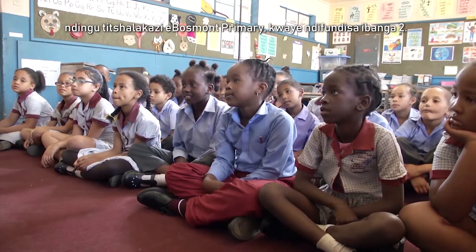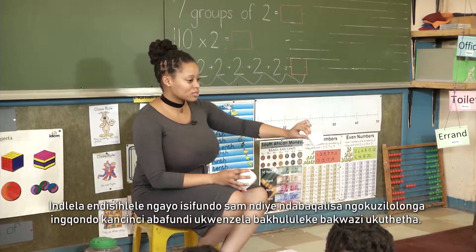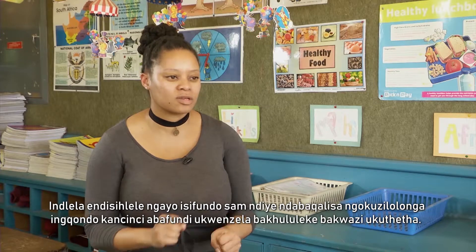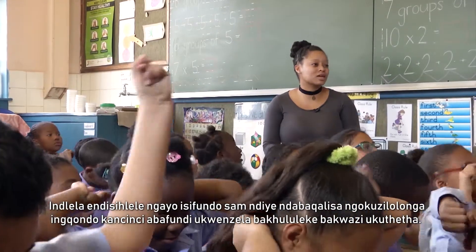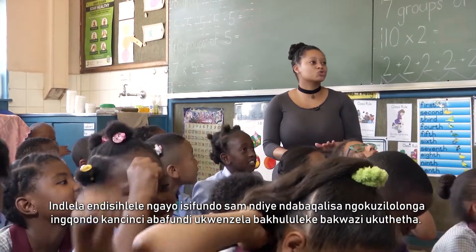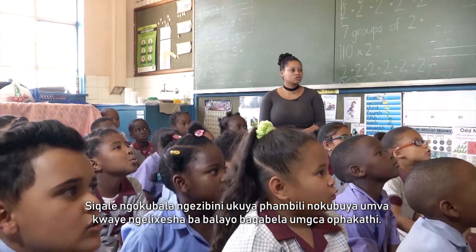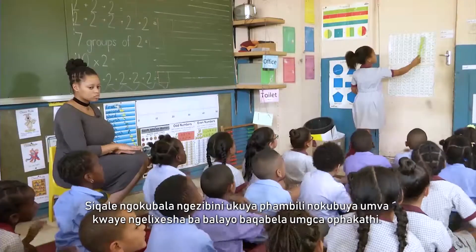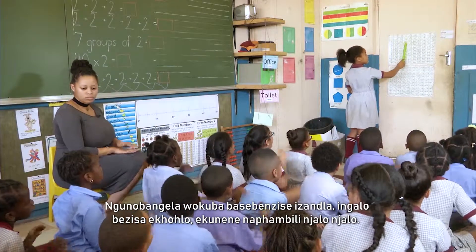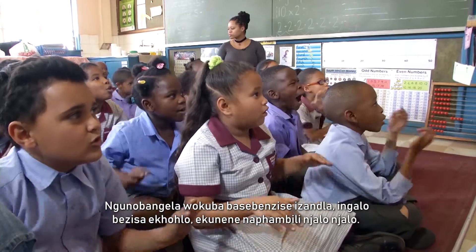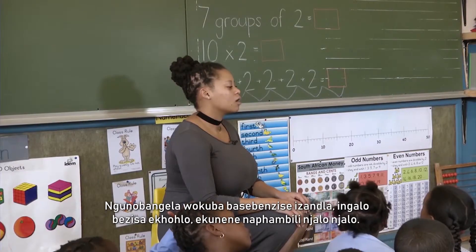Hi, my name is Sendegashlem Bogazi. I've been teaching at Bosman Primary for the past three years and I teach grade twos. The sequence of my lesson was that we first started off just for the aim of warming up their brains a bit and to also get them speaking and into the lesson. We started counting in twos, forwards and backwards, and whilst they count, they cross the midline. So that's the purpose of them moving their hands and arms from right to left, back and forth.